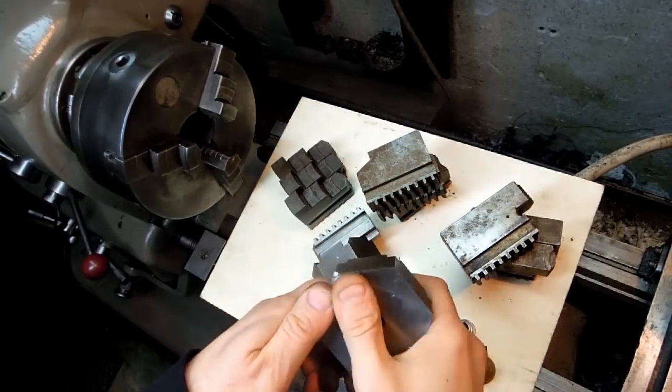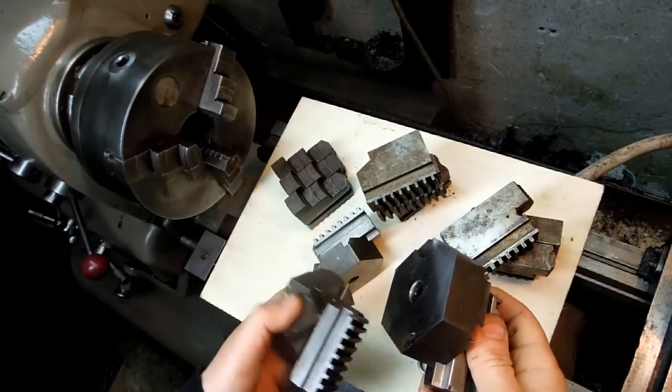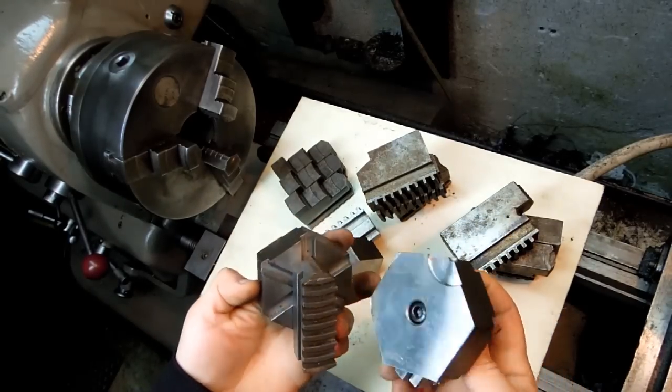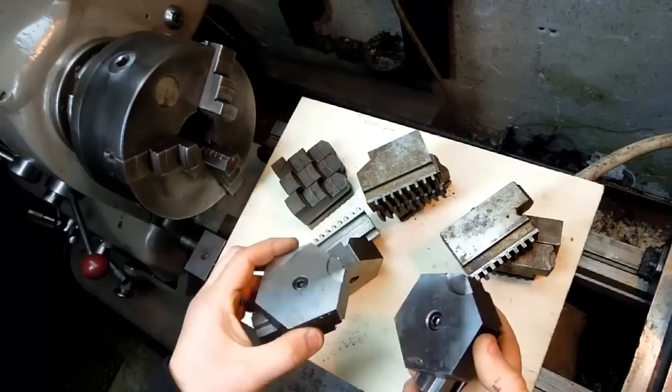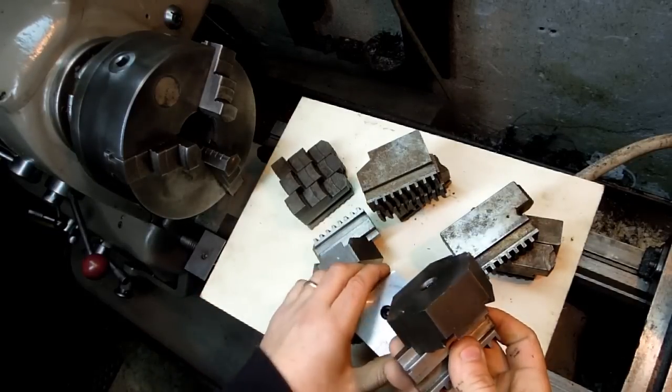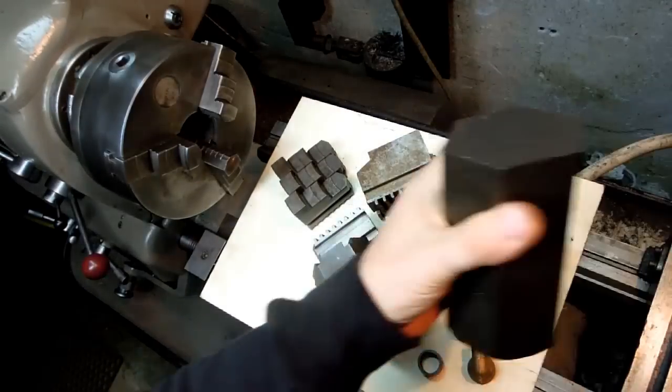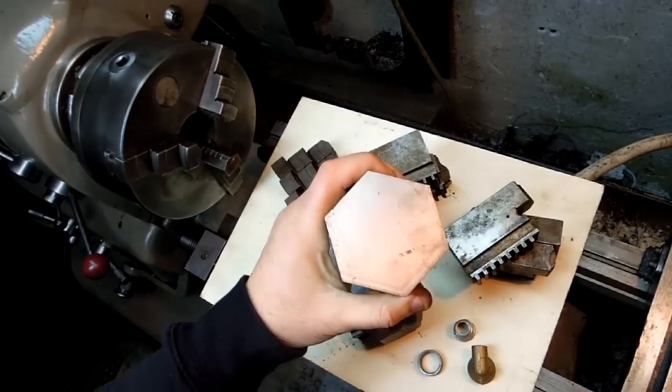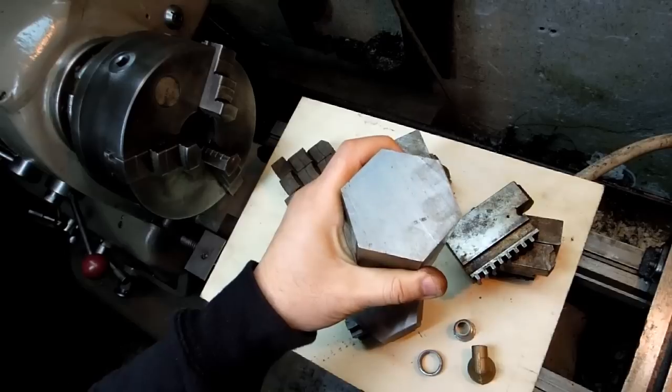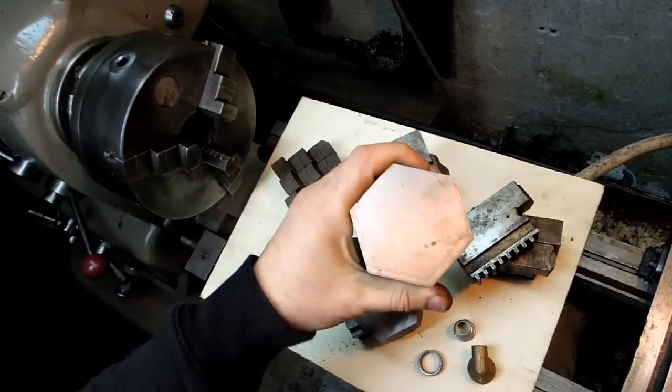So these are my soft jaws. I can't take credit for these, I think I've seen this idea around before. I'm sure they look familiar. I just used some hex stock that I had on hand, and I still have it. I don't go through a lot of material here. This is, I think, 70 millimeter, like two and three quarter inch hex.